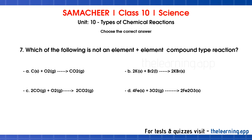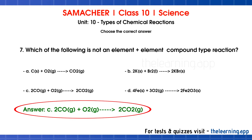Seventh question: Which of the following is NOT an element plus element to compound type reaction? Options: 1) C plus O2 gives CO2, 2) 2K plus Br2 gives 2KBr, 3) 2CO plus O2 gives 2CO2, 4) 4Fe plus 3O2 gives 2Fe2O3. Options 1, 2, and 4 all involve single elements combining. Option 3 has 2CO, which is a compound (carbon monoxide), not a single element. Therefore option C is not an element plus element type reaction. Correct answer is option C.